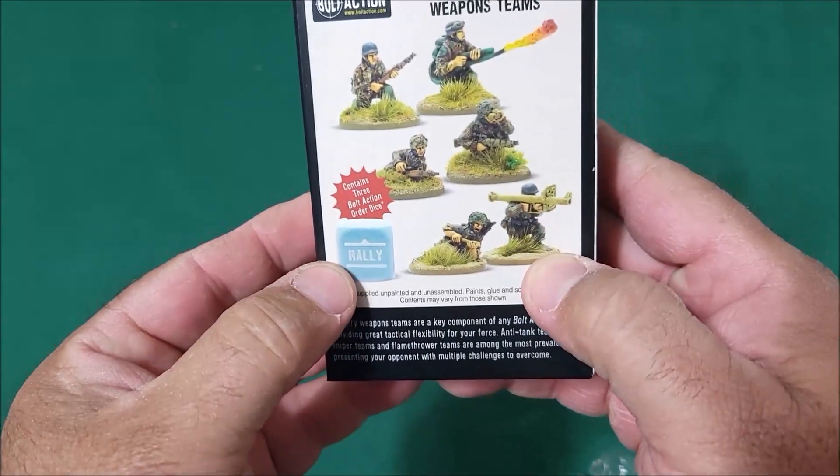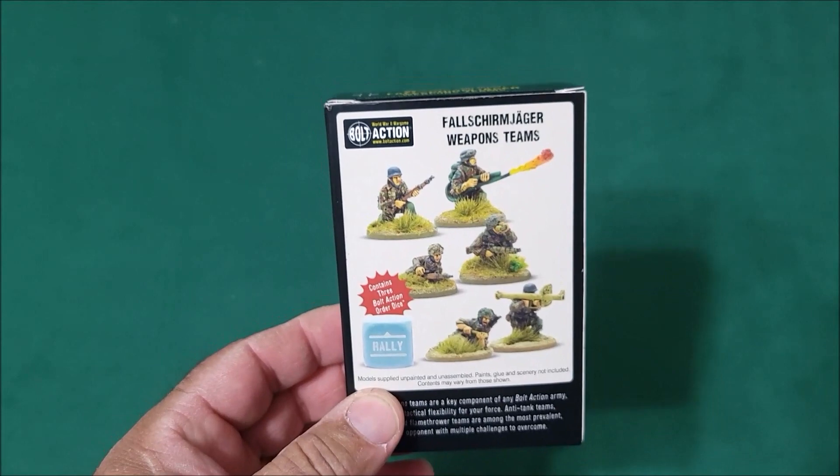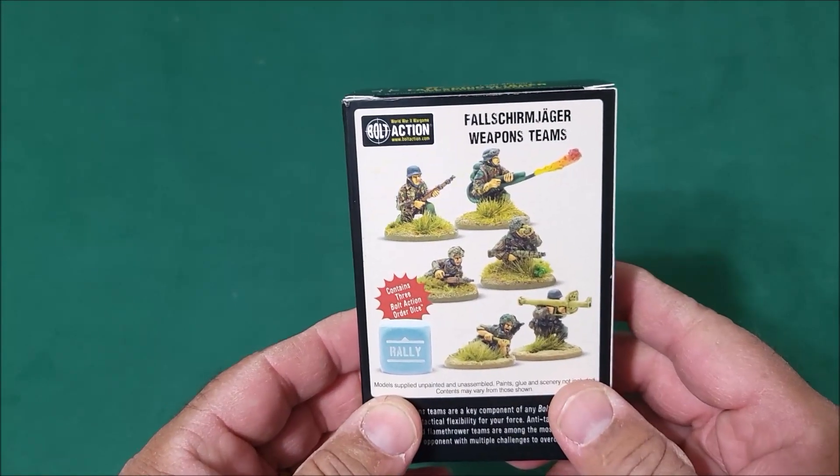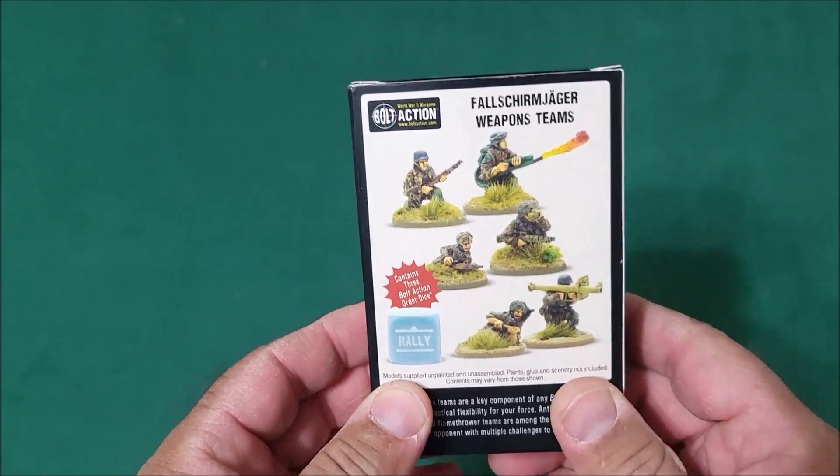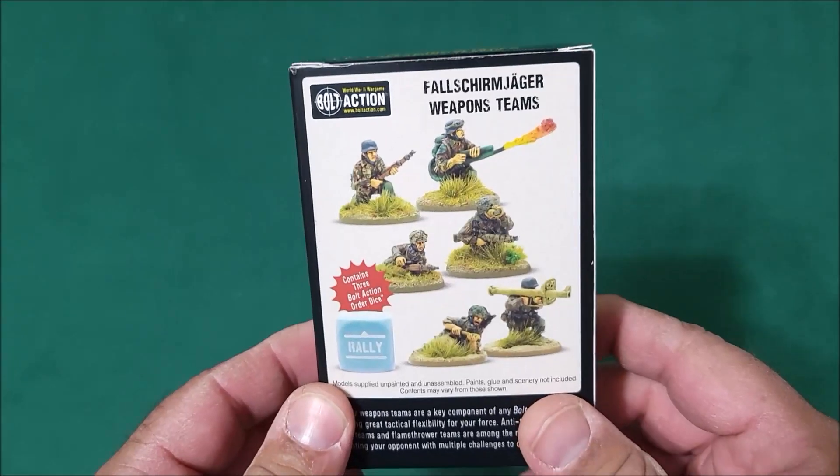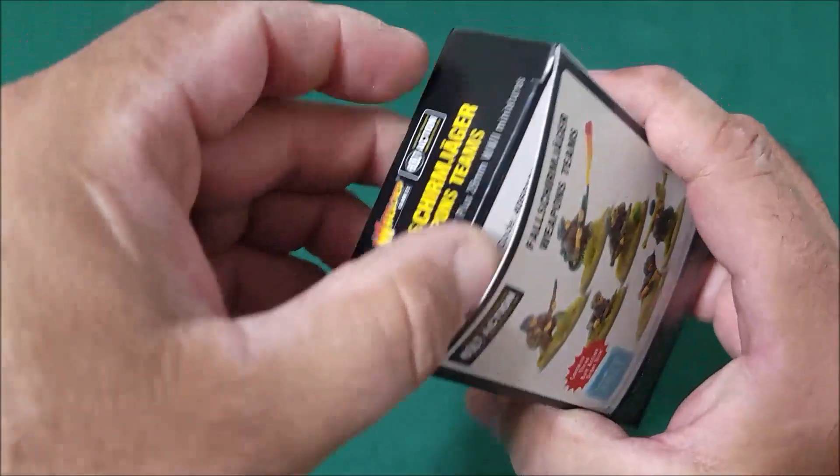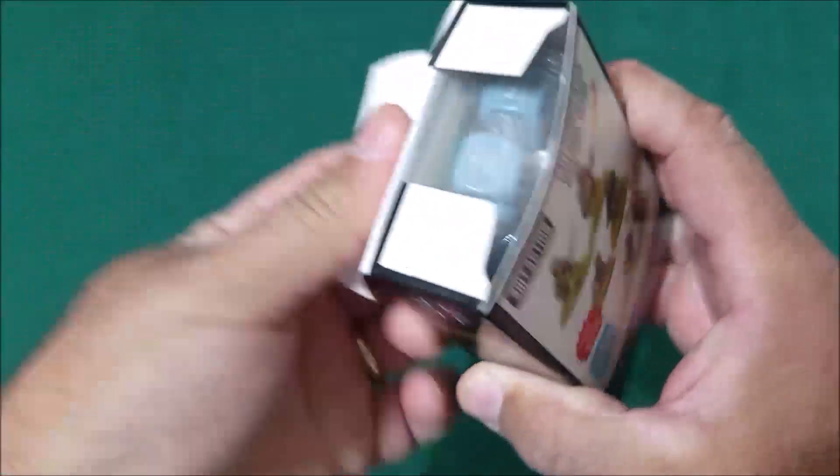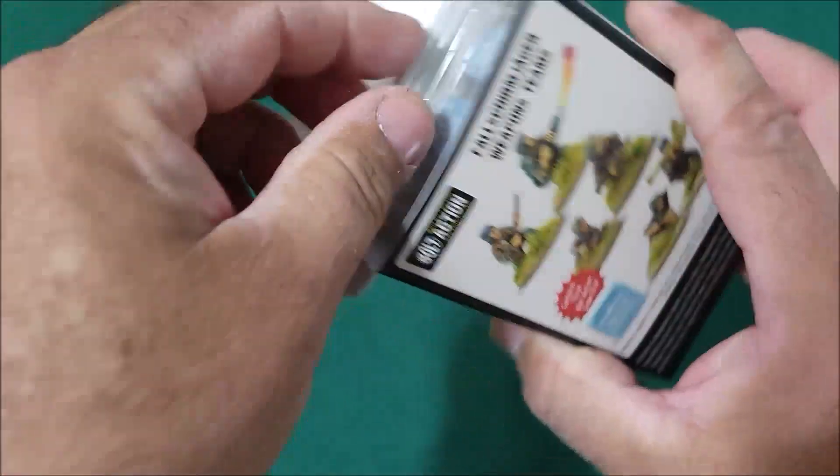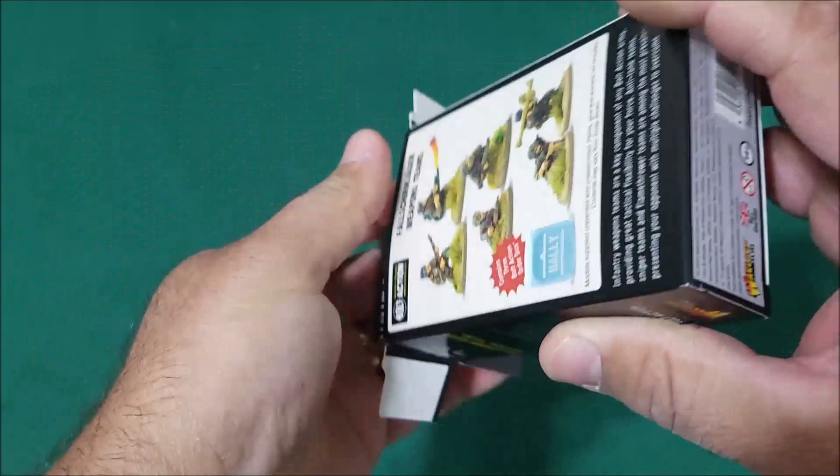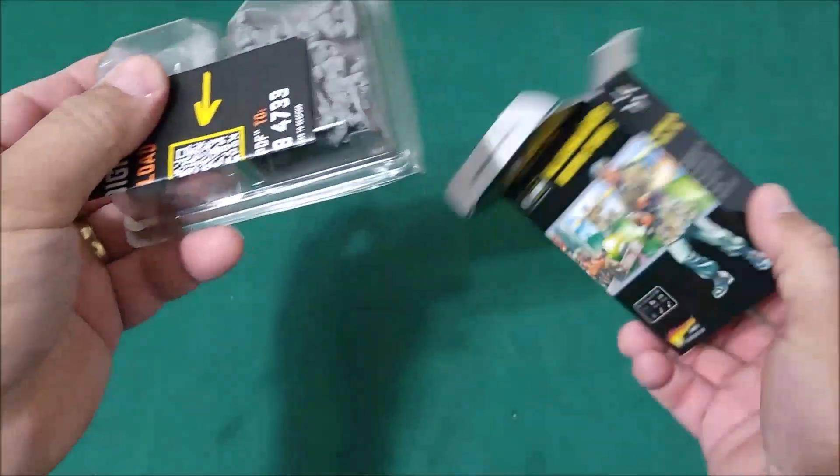Here's the back of it and you get three dice. This box is so small, I was like there's no way it's got six miniatures in here and three dice, but yeah Warlord was able to show it can be done. So we go ahead and open it up, here we go.